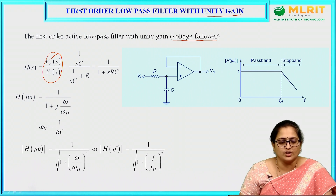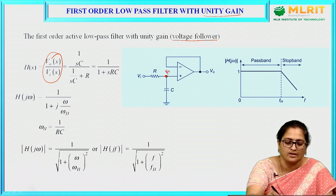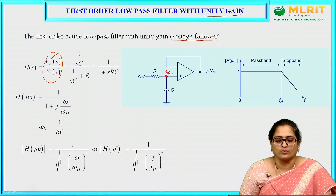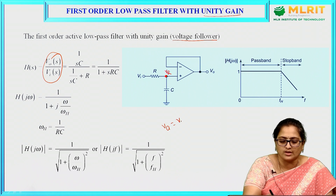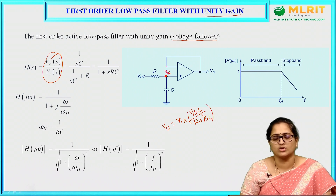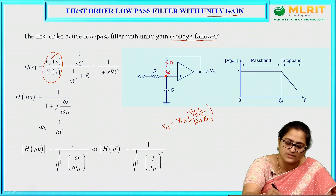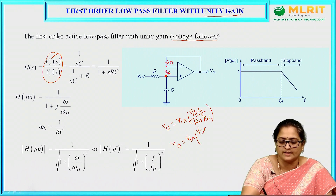V naught of s can be found by applying the voltage divider rule. Let us assume the voltage across this node as Va. Applying the voltage divider rule across Va, you can write Va equals Vin into (1/sC) divided by (R + 1/sC). By applying the virtual short concept, V naught will equal Va. So finally, V naught equals Vin into (1/sC) divided by (R + 1/sC).